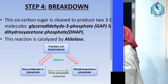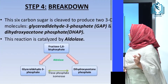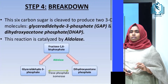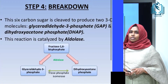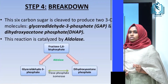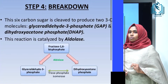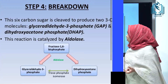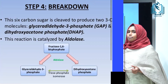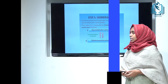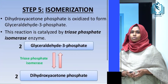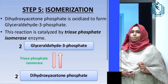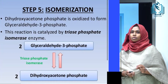The second stage of glycolysis is the splitting phase. In step four, fructose-1,6-bisphosphate is broken down into two three-carbon compounds — dihydroxyacetone phosphate and glyceraldehyde-3-phosphate — by the enzyme aldolase. In step five, dihydroxyacetone phosphate is isomerized into glyceraldehyde-3-phosphate by phosphotriose isomerase, so from one molecule of glucose we obtain two molecules of glyceraldehyde-3-phosphate.